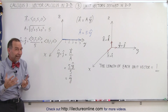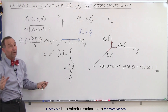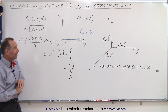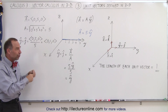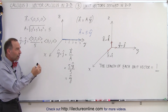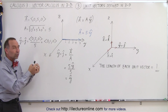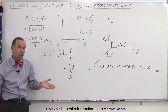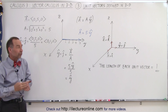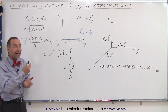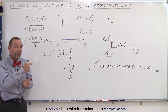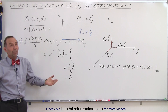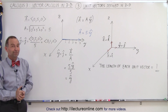Hopefully that clears things up a little bit. This is how we define unit vectors in the three directions, and that's why they're sometimes called the three-directional unit vectors that define the direction of the vectors in the x, the y, and the z-directions. That's how we use unit vectors.